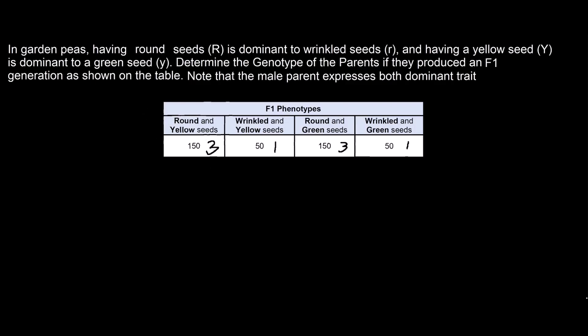Let us first look at their seed shape. We have round and wrinkled. Let us count all those who have round seeds. They have 3 plus 3 so round seeds have a total of 6 while wrinkled seeds have a total of 2.